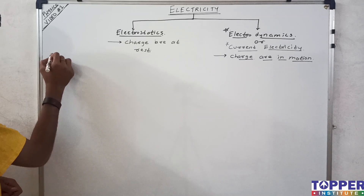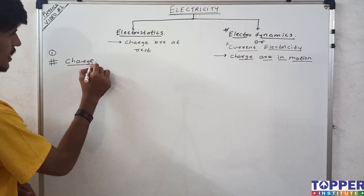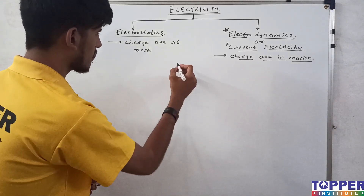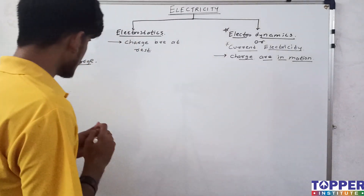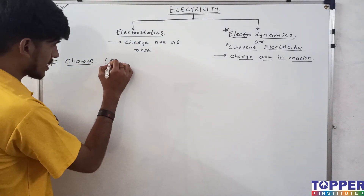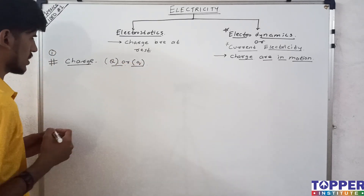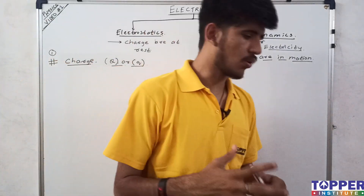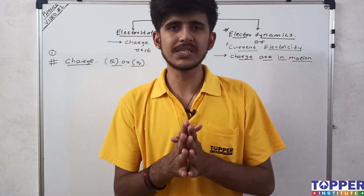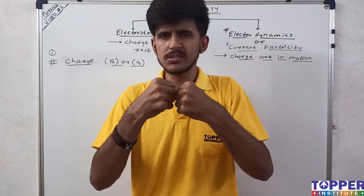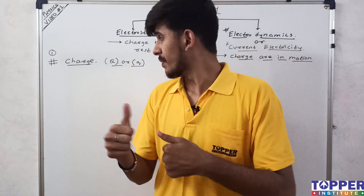Let's start with the first terminology: Charge. The first thing we need to study is charge. Charge is represented by capital Q or small q. You may have heard that charges are of two types: positive charge and negative charge. Like charges repel each other, and unlike charges attract each other.